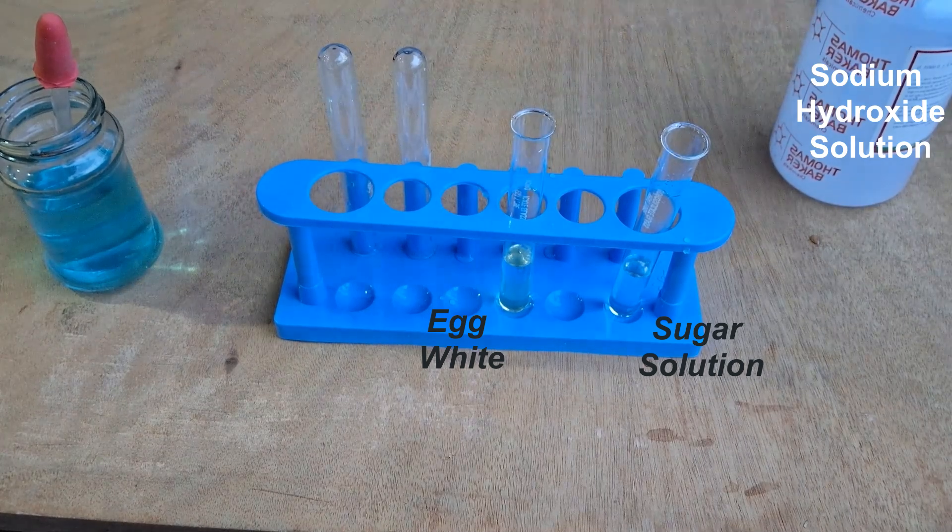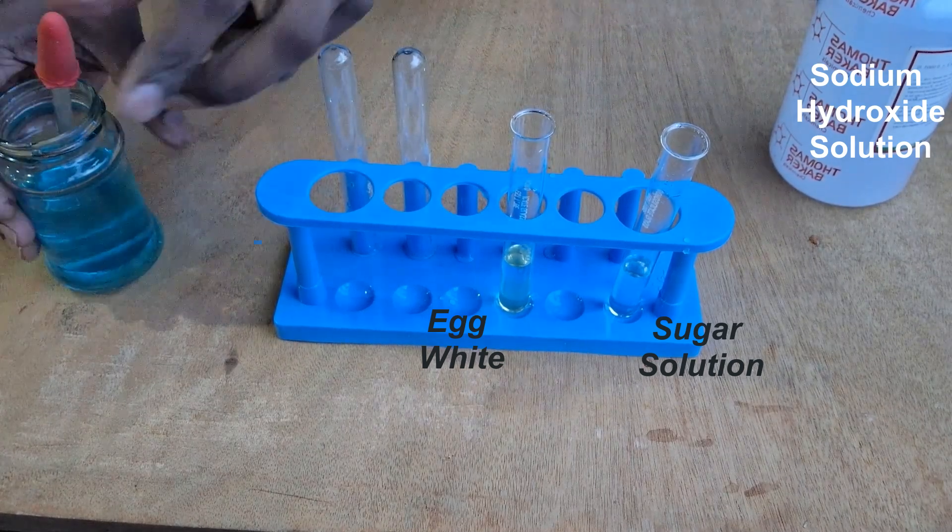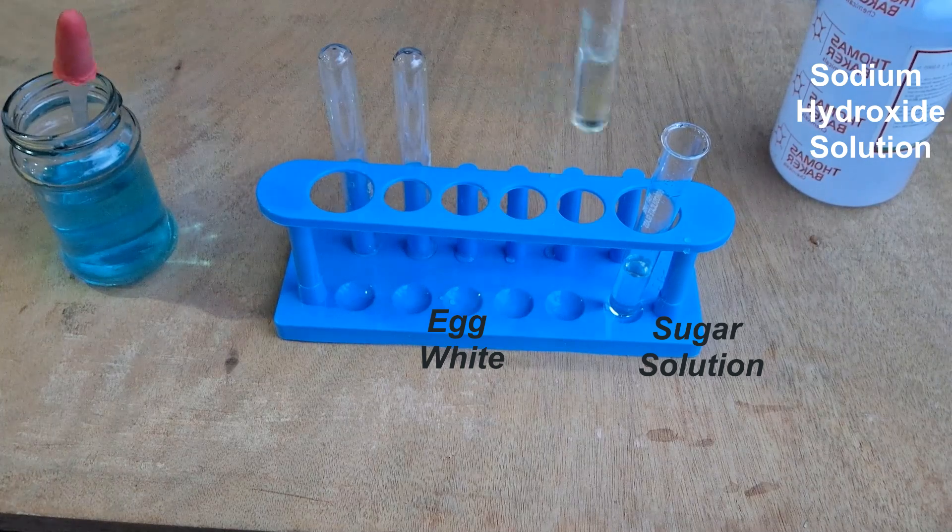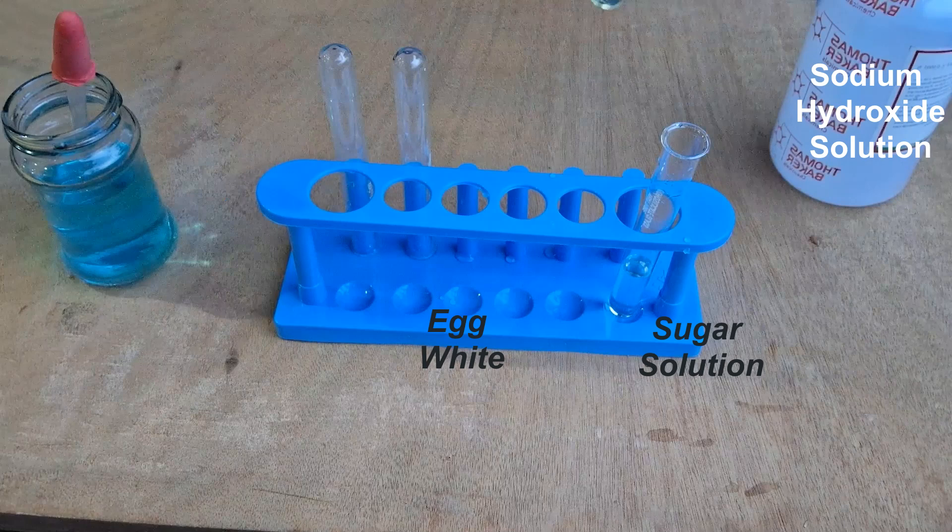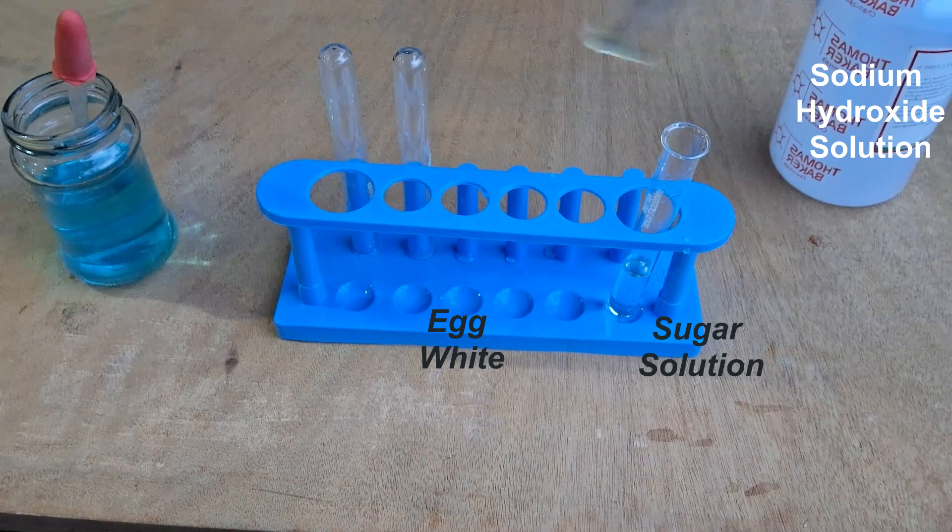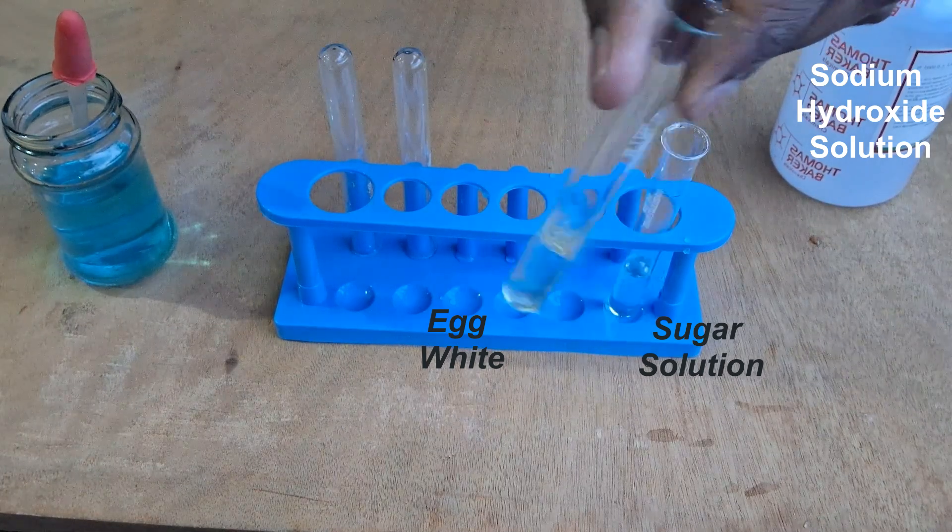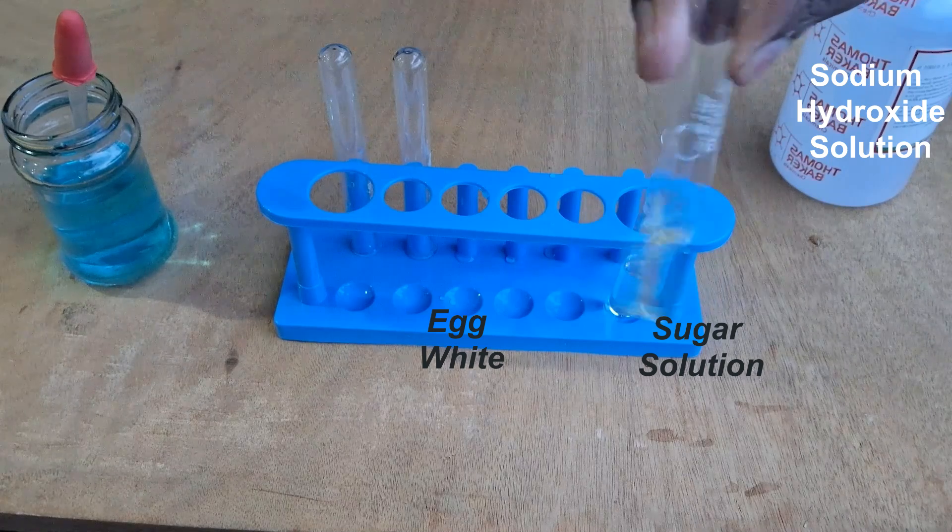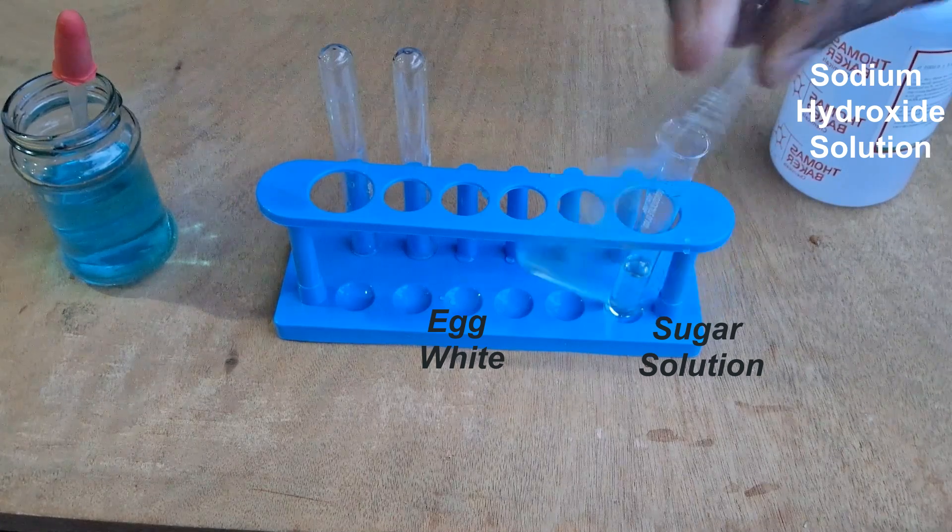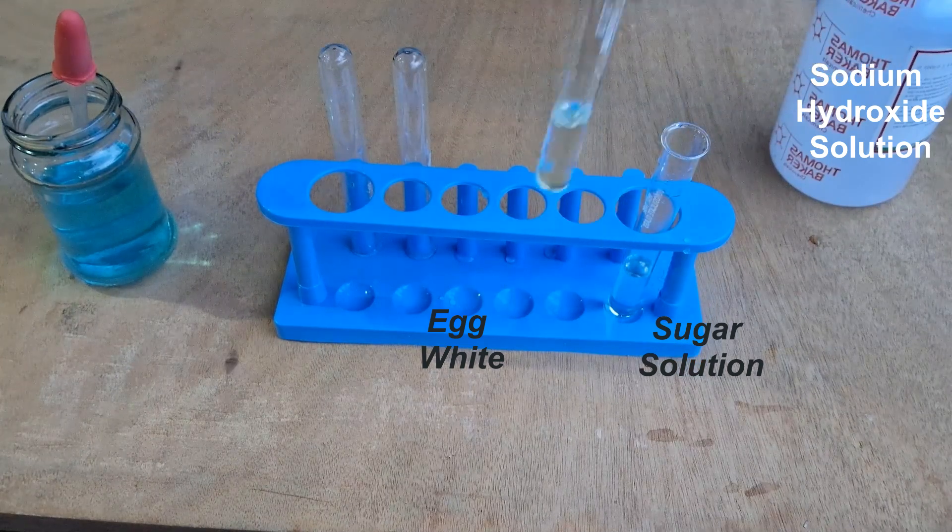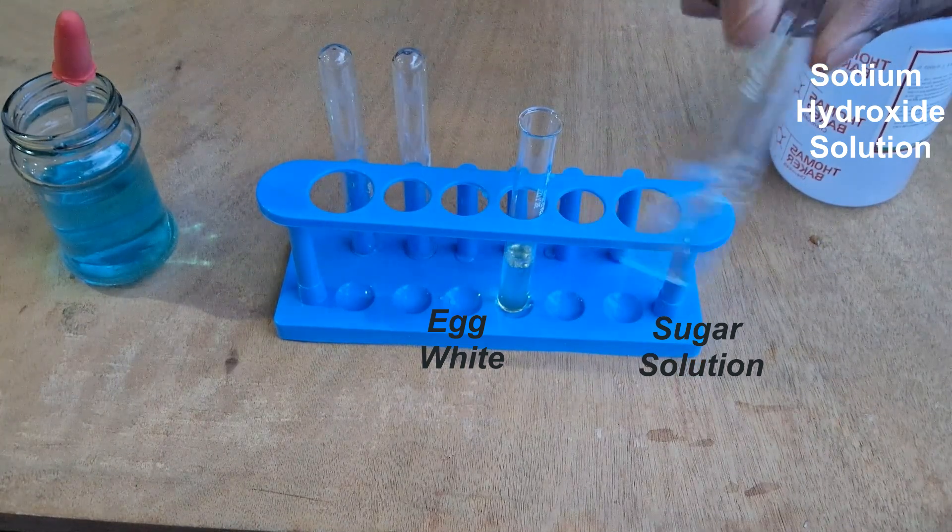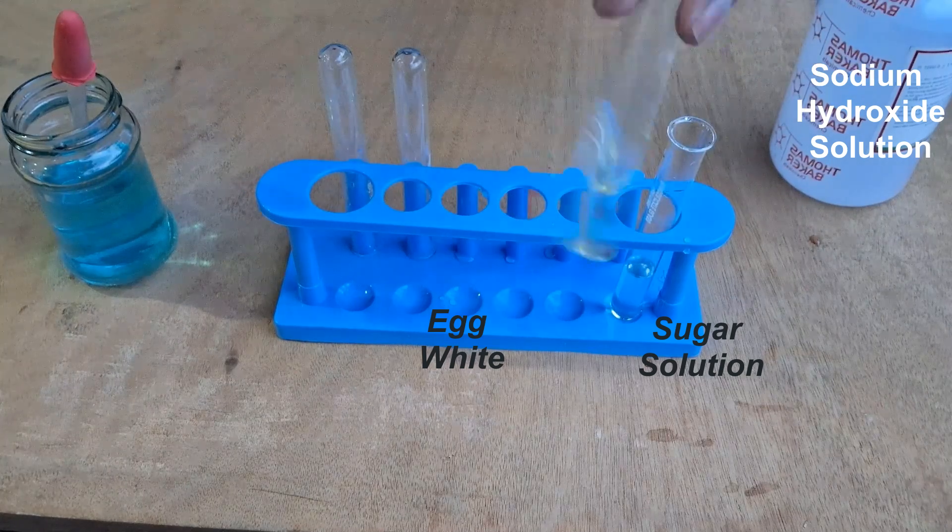Now we'll take the test tube and swirl it about, shake it a little bit so that all the sodium hydroxide gets mixed up with the egg white. I'm doing this because the egg white is a little stiff and doesn't easily mix with the sodium hydroxide unless it's shaken about. We'll do the same thing with sugar to make sure it mixes as well.